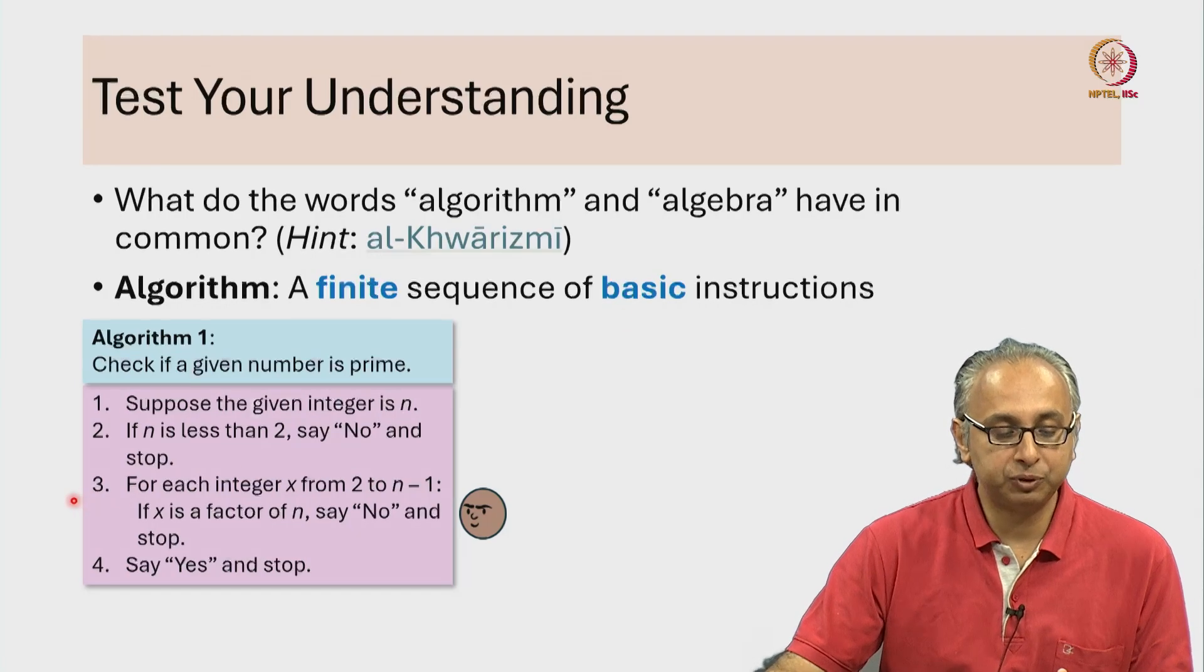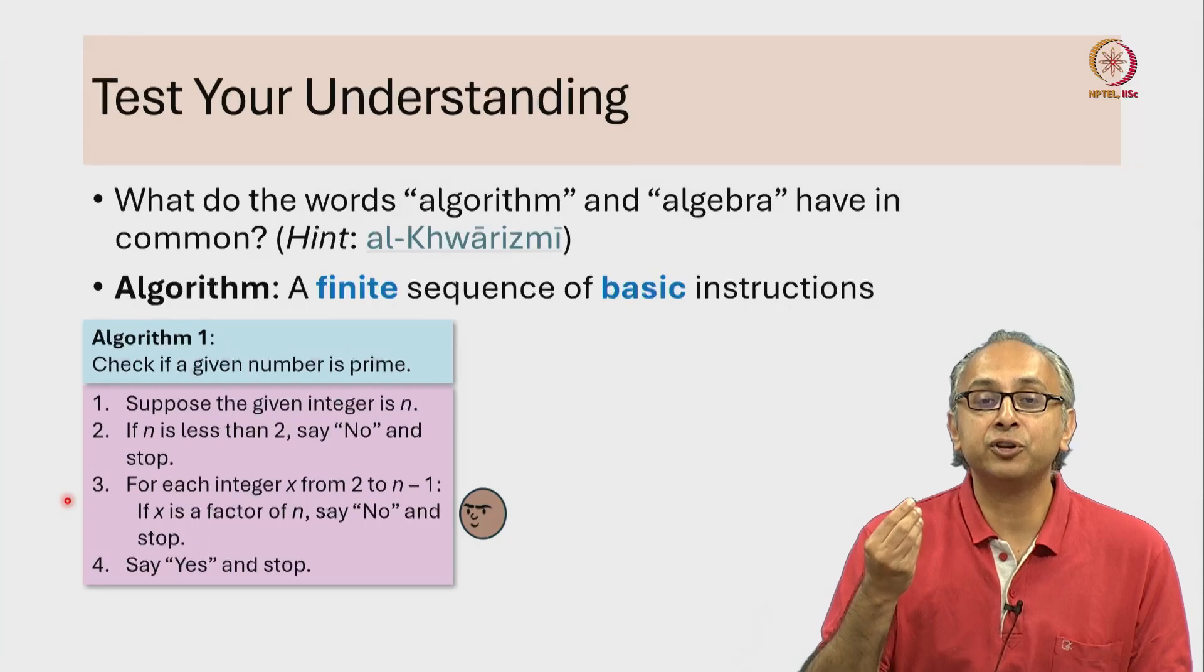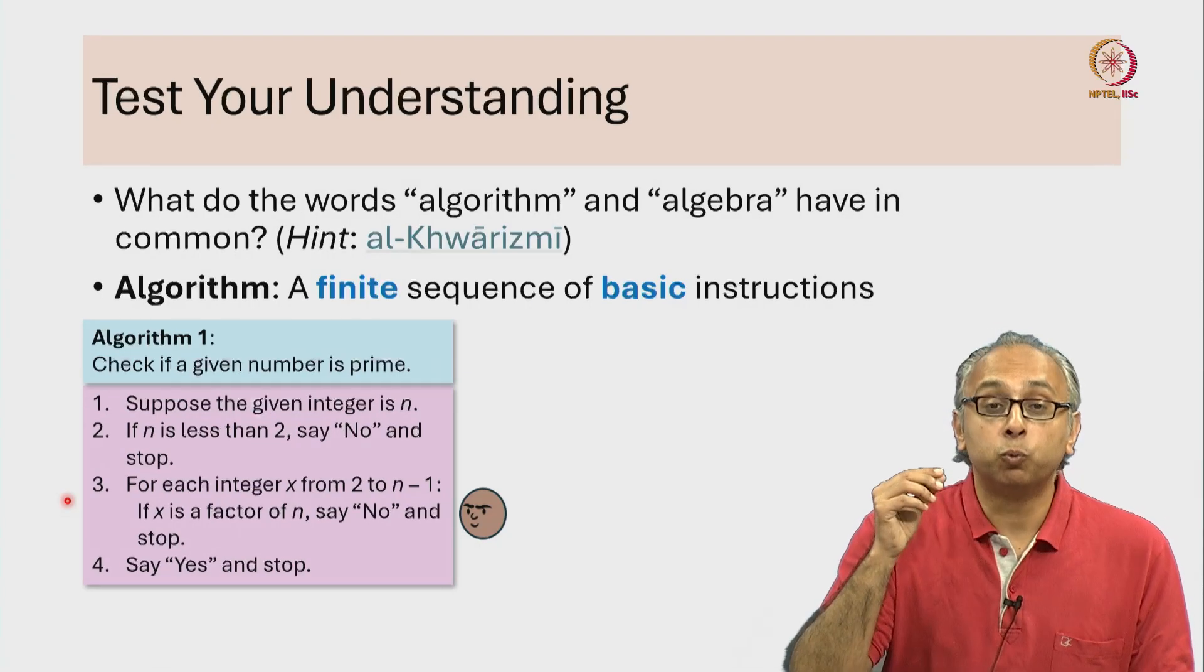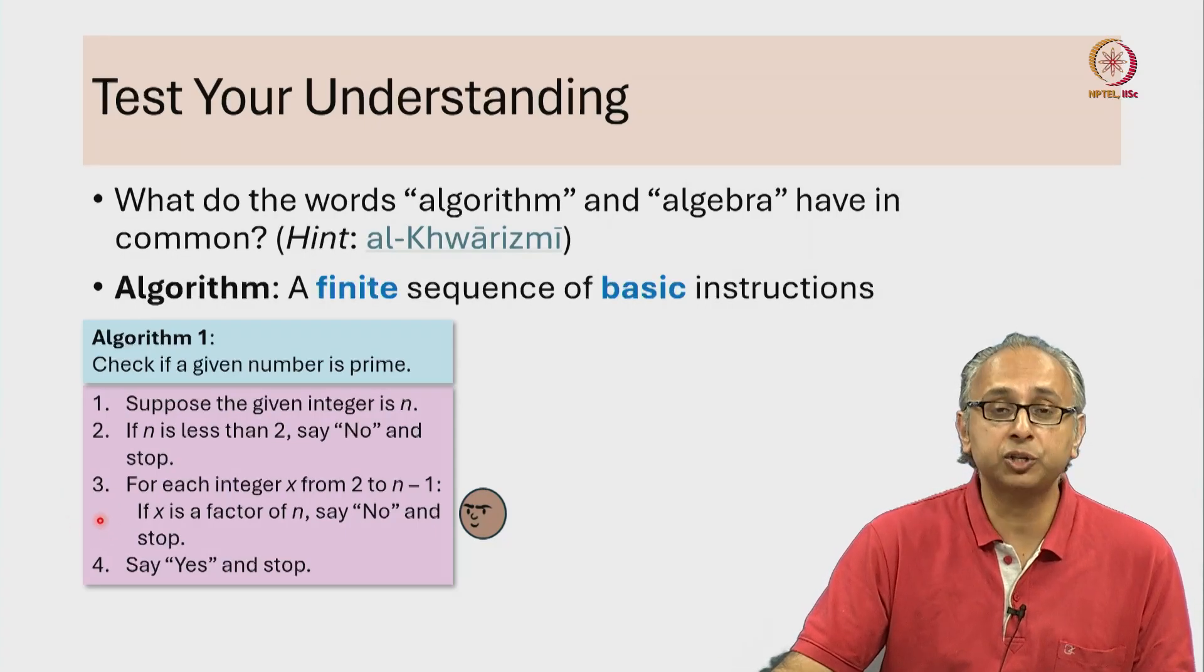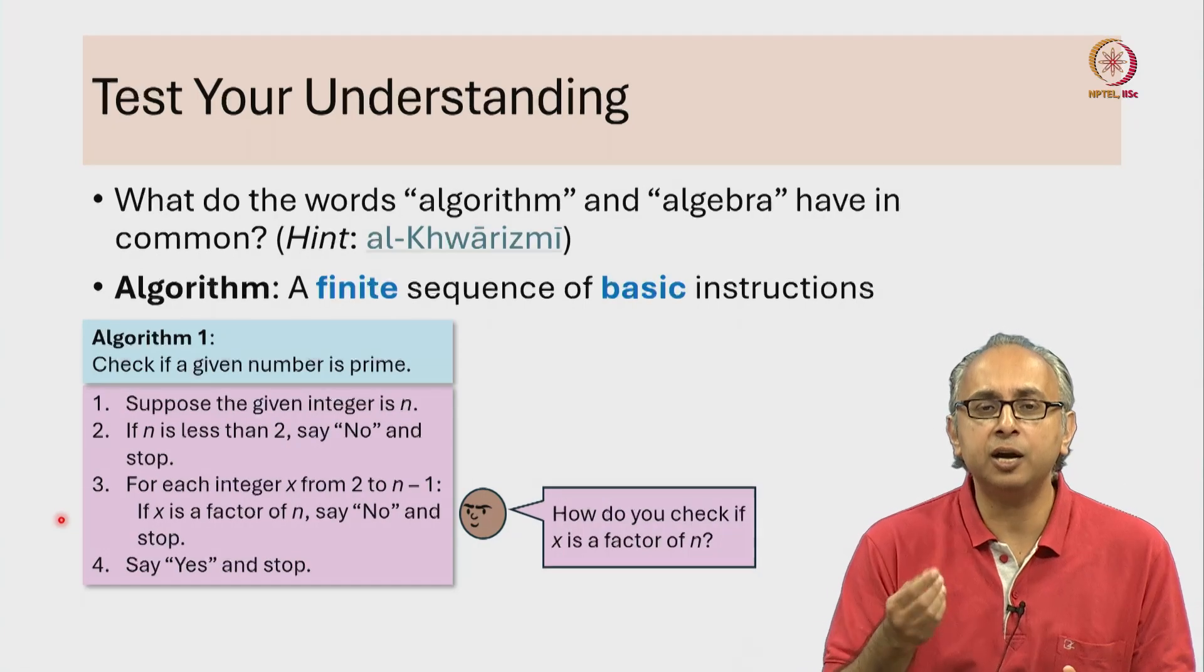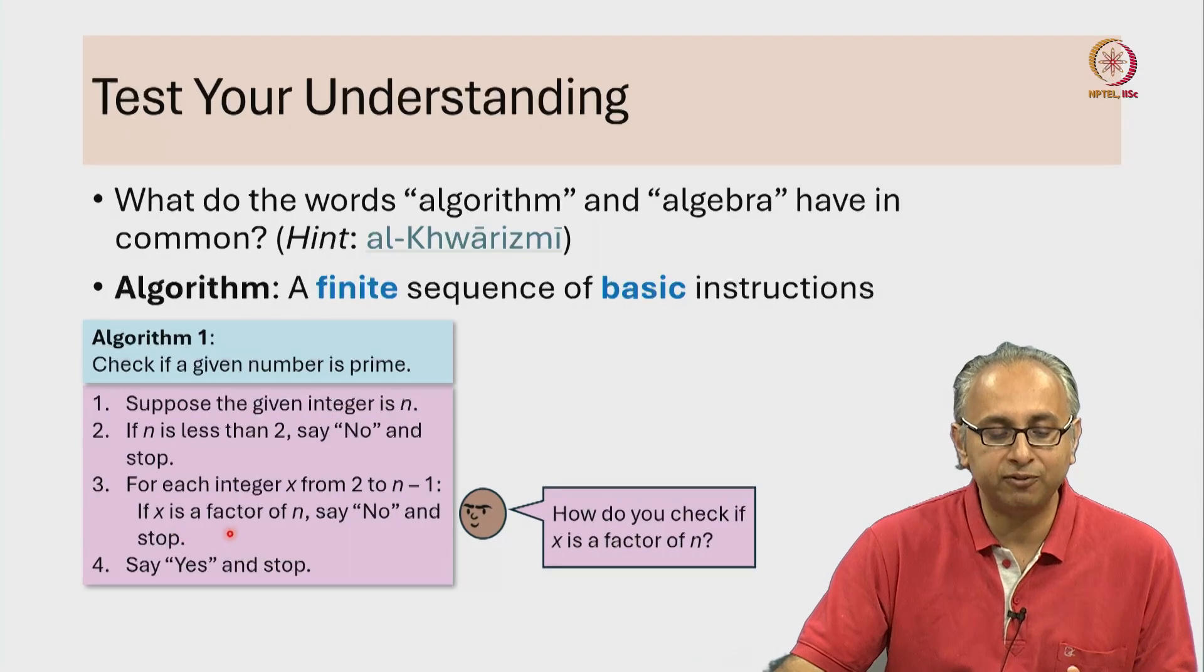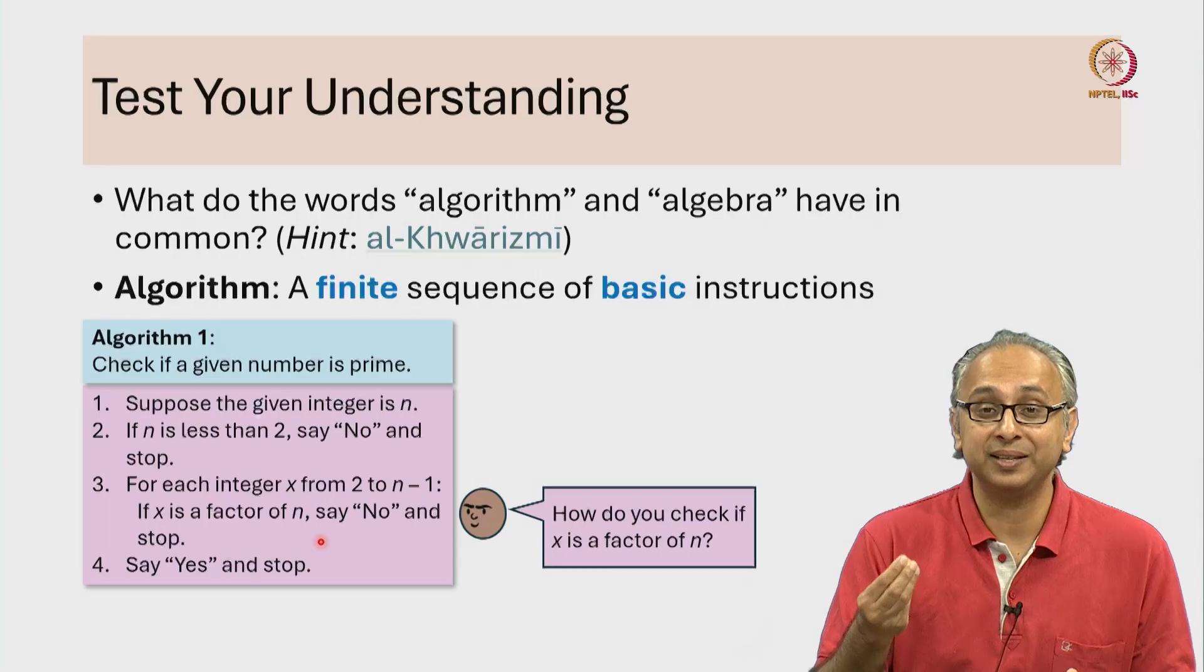As you can see, step 3 is asking us to do something again and again for different values of x. But what it is asking us to do might be a basic instruction. But again, you shouldn't just blindly accept it. You should stare at it carefully. You should ask yourself, is it really the case that we can check if x is a factor of n as a basic instruction?